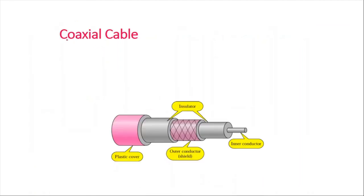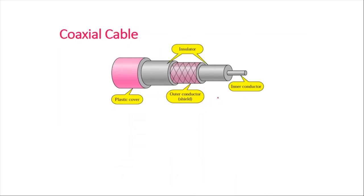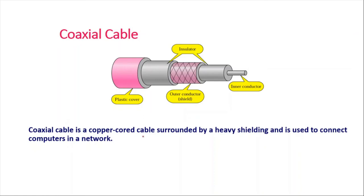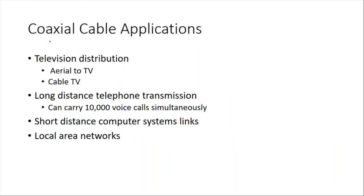The coaxial cable is a copper core cable surrounded by heavy shielding, used to connect computers in a network. It has an inner copper core, then an insulator, a second conductor, a second insulator, and a plastic cover. Applications include TV distribution, long-distance phone transmissions carrying up to 10,000 voice calls simultaneously, short-distance computer systems, and local area networks (LAN).